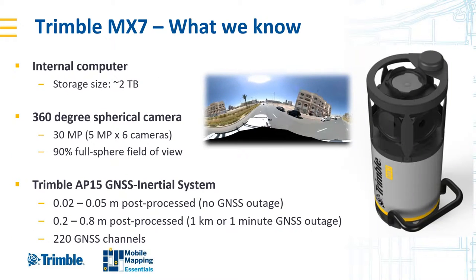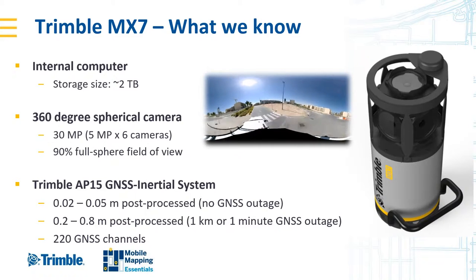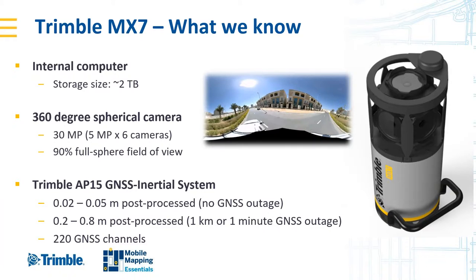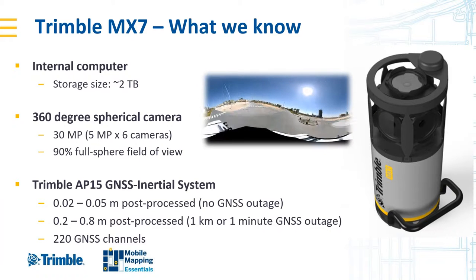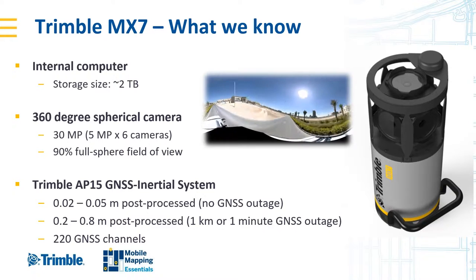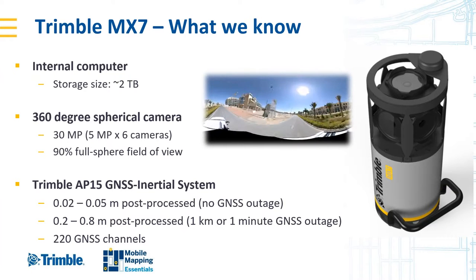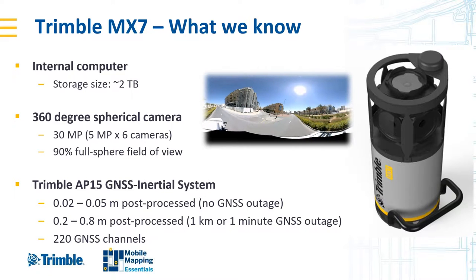The MX7 captures 360-degree imagery. Inside we have two terabytes of storage and a 360-degree spherical camera with 30 megapixels in total — that's six cameras each of five megapixels. We also have a Trimble Planix GNSS system that in the best-case scenario, with no GNSS outages, can deliver trajectory accuracy down to the two-to-five centimeter level, though it does depend on your GNSS environment.